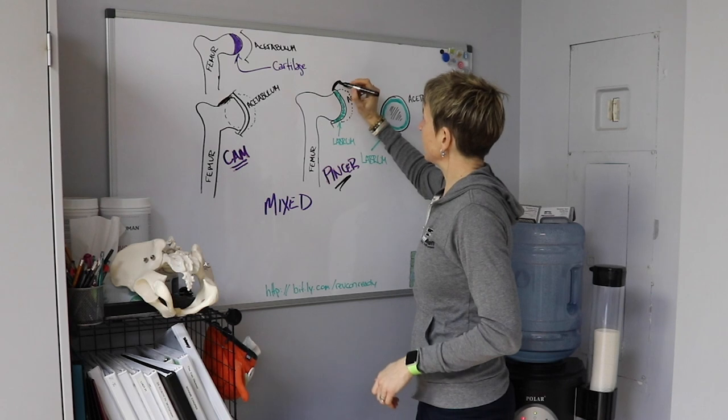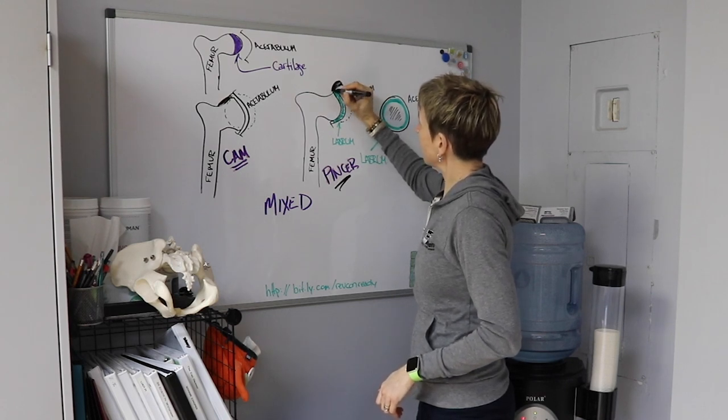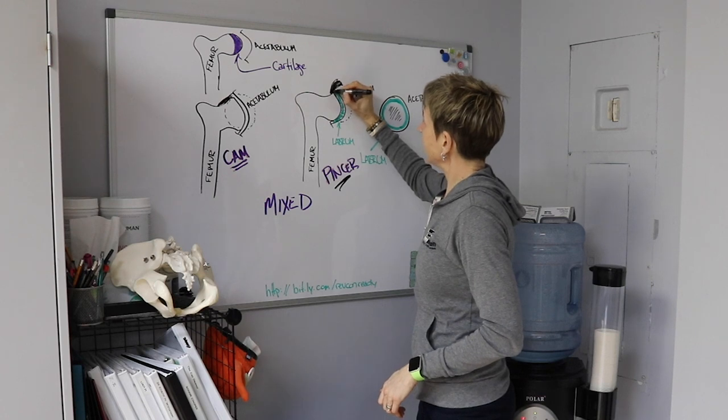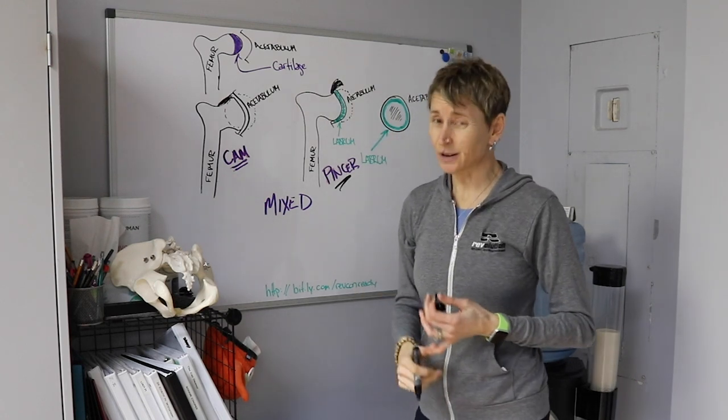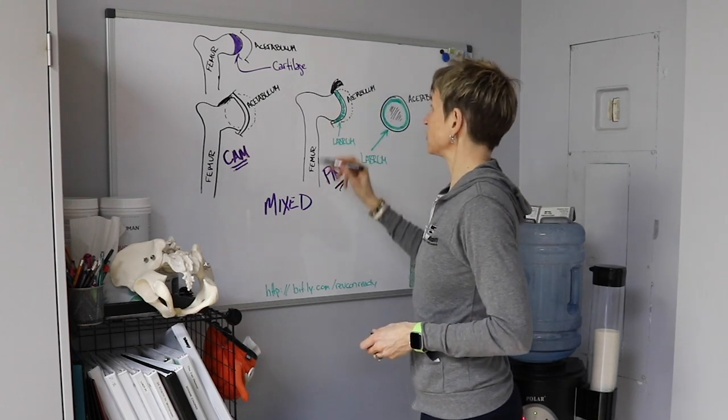So then, again, the head of your femur butts into that, so it makes a bony callus. And again, the result is the same. Less range of motion, more pain, more dysfunction. So that is called a pincer impingement.